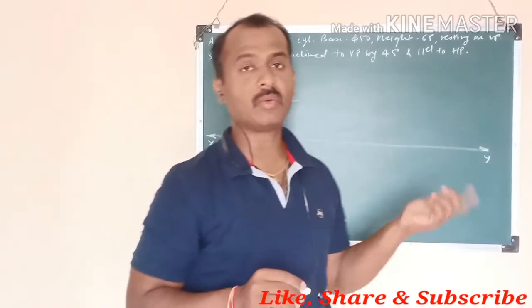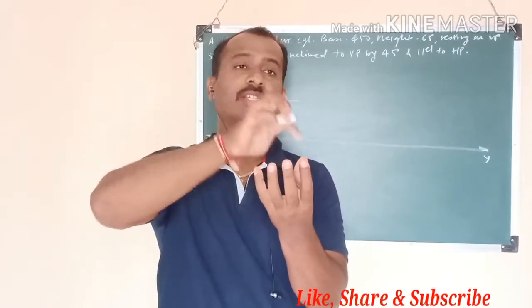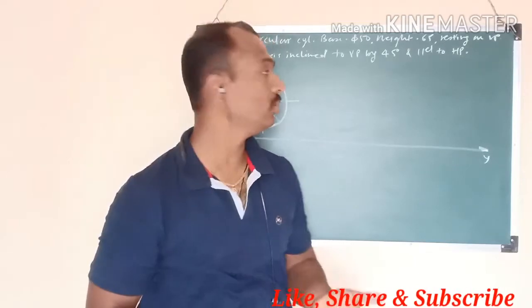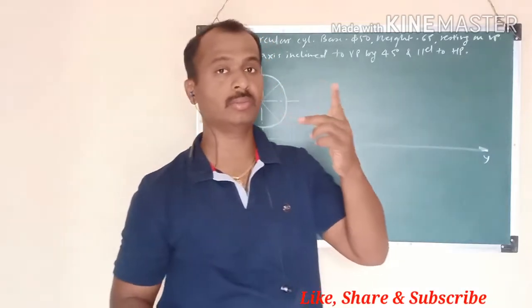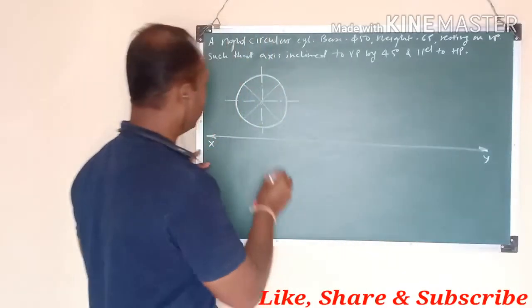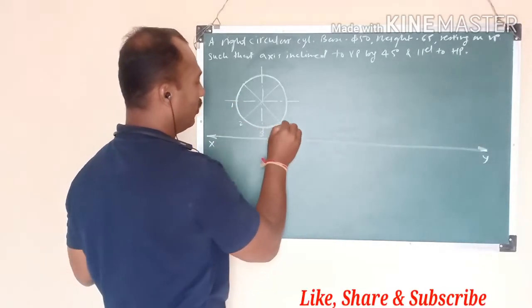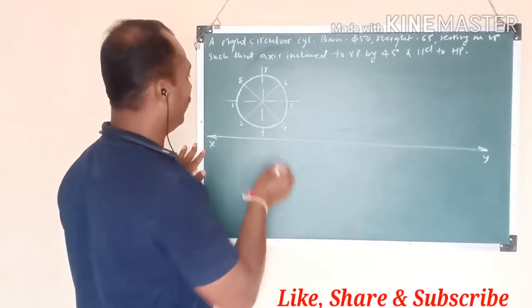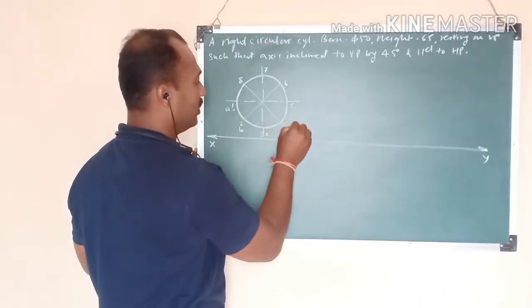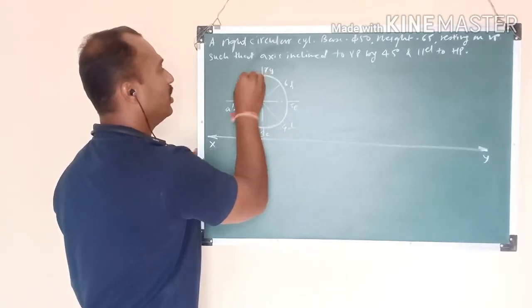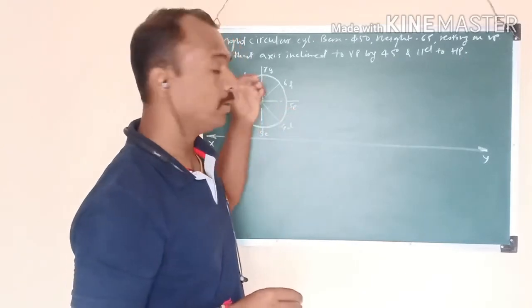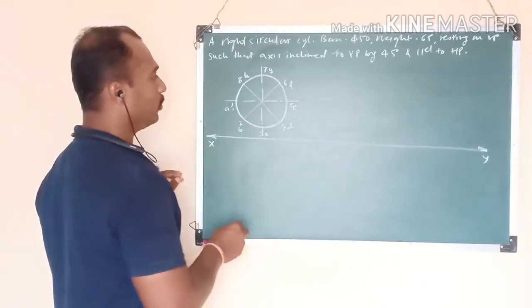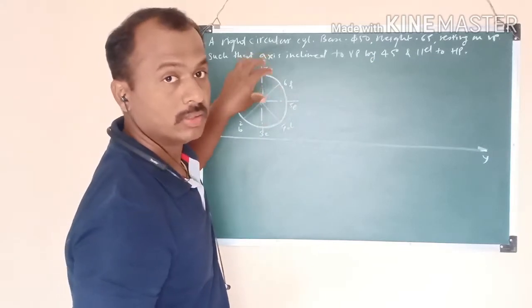The difference between a cone and a cylinder is that a cone has only a base and an apex, with all generators connected to the apex. A cylinder has both a base and a top face — both are circles. So we assign point names for both: numbers 1 through 8 for the top face and letters A through H for the base. Transfer all these projections, since the solid is resting on VP and the circle was drawn in the front view.